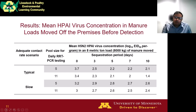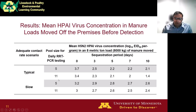Here we present results on the mean HPAI virus concentration in manure loads that may be moved off the premises before detection. Similar to the likelihood, the mean HPAI virus concentration also decreases as sequestration time is increased from 0 to 10 days. For example, under the typical spread scenario using an 11-swab pool size, the mean virus concentration decreases from 3.4 log EID50 per gram with 0-day sequestration to 1.4 log EID50 per gram with a 10-day sequestration.